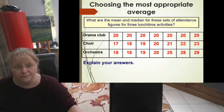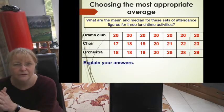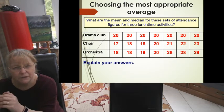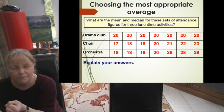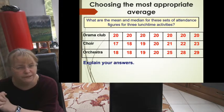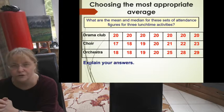Now this is quite nice, but what happens when we have information like this? I just want you to work out, do you do the mean, median or mode? So for the drama club, what would you use: mean, median or mode? Choir and orchestra. Have a think.